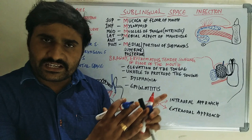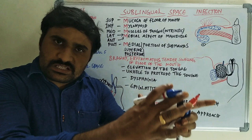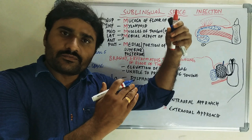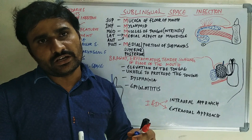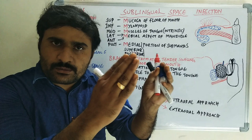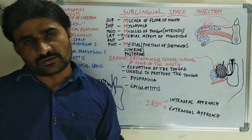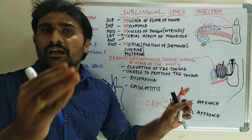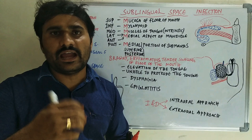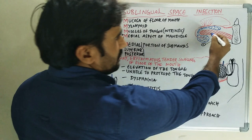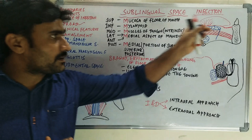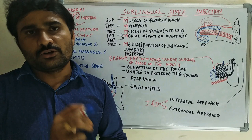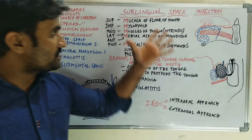The extraoral method is used when there is simultaneous involvement of the sublingual space along with the submandibular and submental spaces. If sublingual and submental spaces are involved, an incision is placed at the lower border of the mandible in the chin region, and blunt dissection is performed, piercing through the mylohyoid muscle fibers to drain both spaces. When sublingual and submandibular spaces are involved, the incision is placed just anterior to the angle region, again piercing through the mylohyoid muscle to completely drain the spaces. After drainage, a rubber drain is placed and sutured at the incision site.